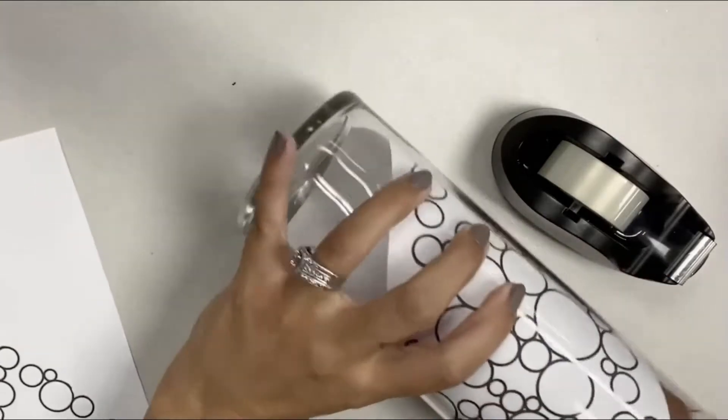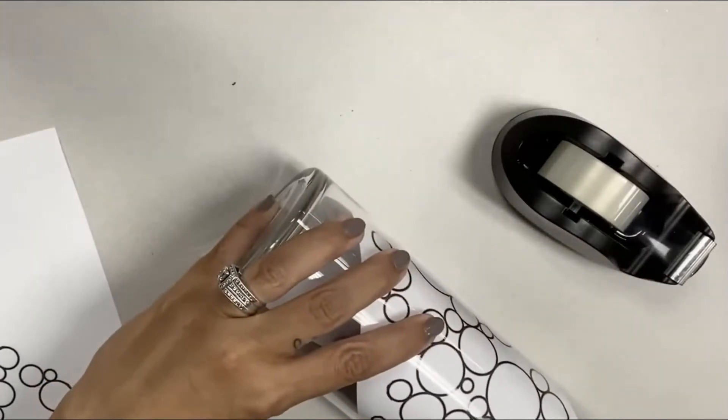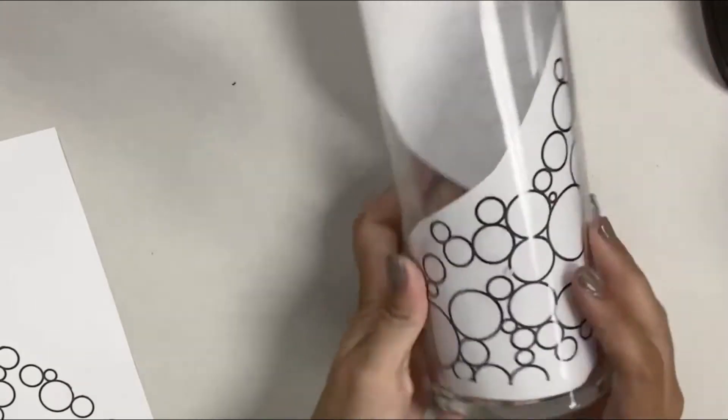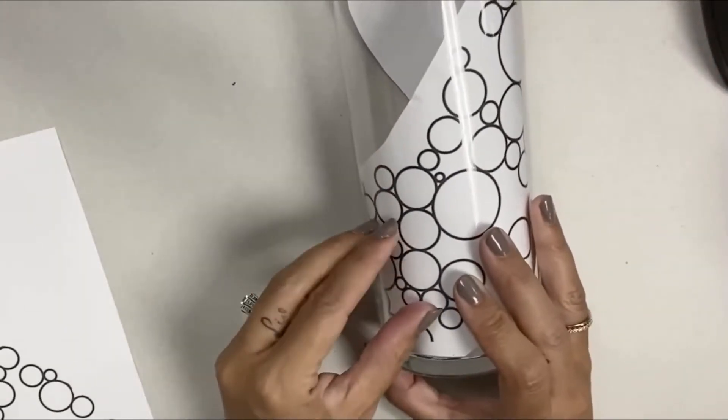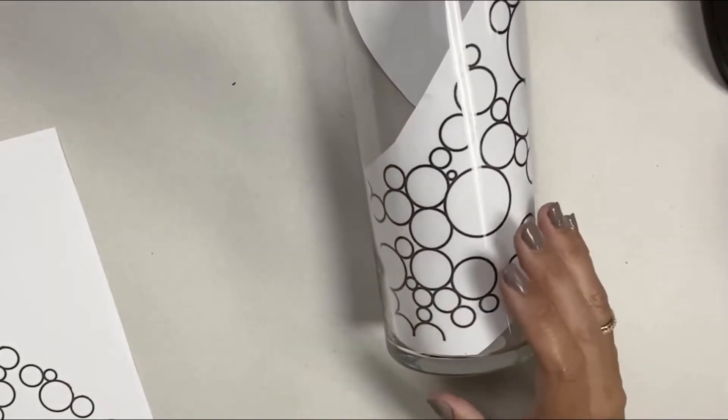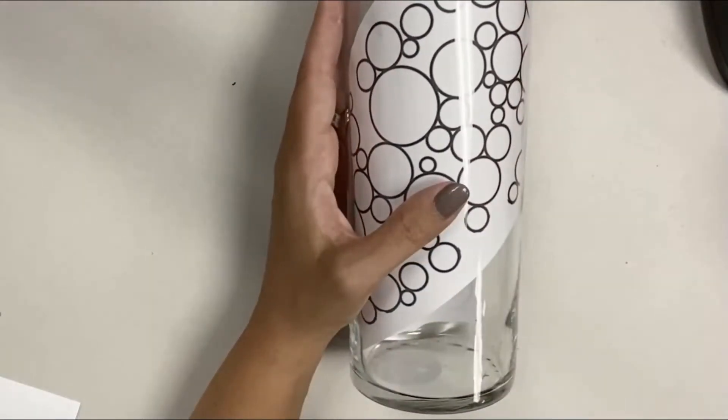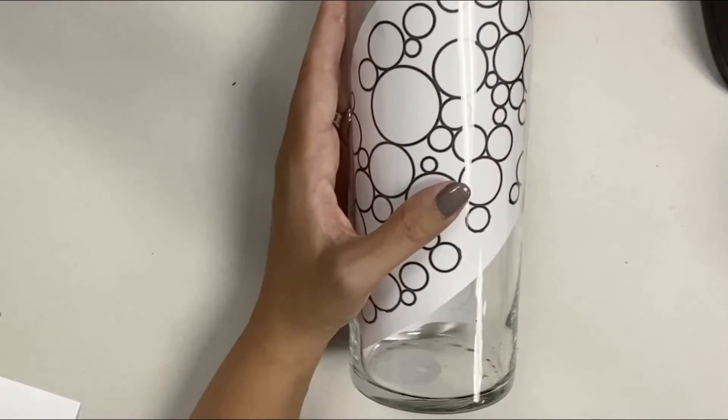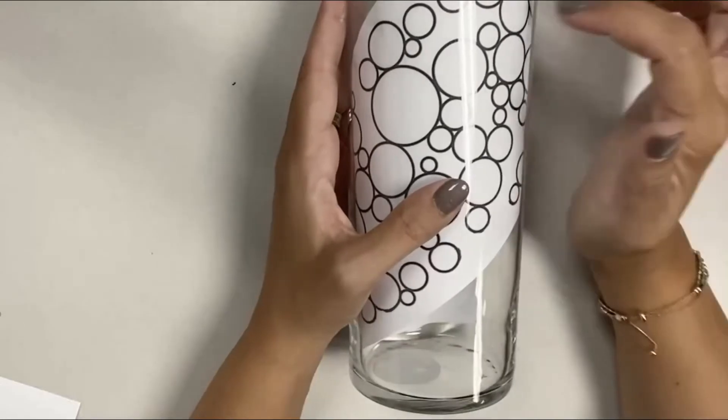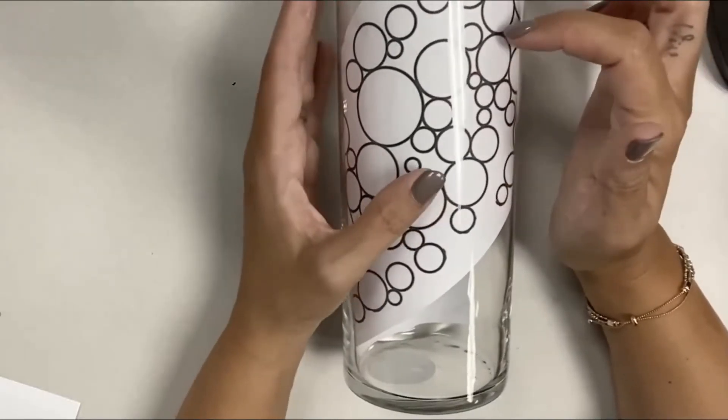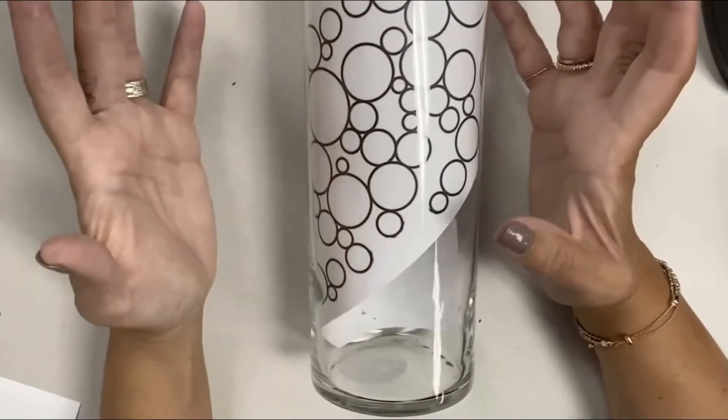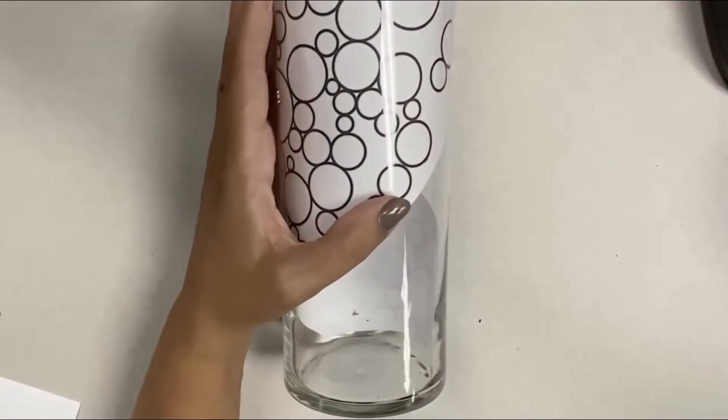All right, so from here you can do one of two things. You can go through, and if you have a design like this where it's kind of one-dimensional—or sorry, two-dimensional—you can trace your design with the kind of puff paint first.